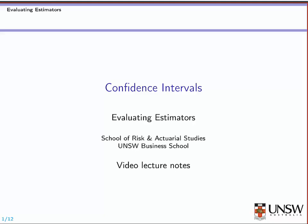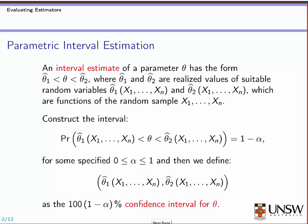In this video lecture we discuss confidence intervals. So far we were dealing only with point estimators. The point estimator, just to give you an example, was x-bar, which was used to estimate the true value of the parameter mu, which is the mean. So x-bar provides just one single value to estimate the population mean mu. Therefore we call it a point estimator.